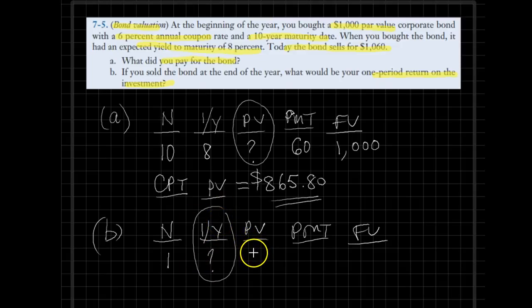The holding period return is the question mark, so I will just leave it blank. The present value, the initial purchase price in that case, is $865.80, so we will input that from the previous step. The payments have not changed, and currently you are able to sell the bond at $1,060.